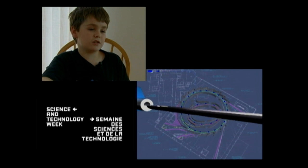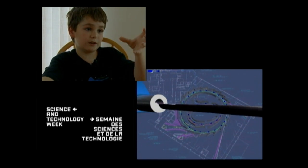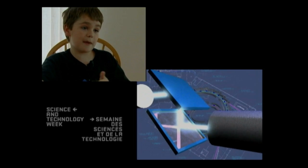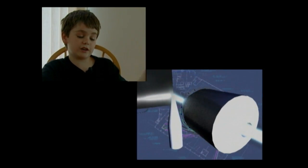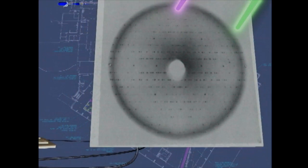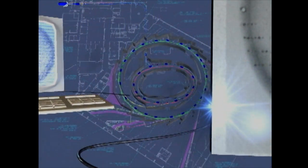Then it gives off x-rays as it goes around the corners, and there's this thing called a wiggler that has lots of magnets and lots of corners, so it gives off lots and lots of x-rays. That's very good.